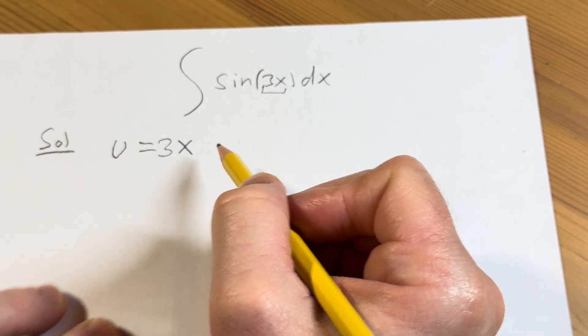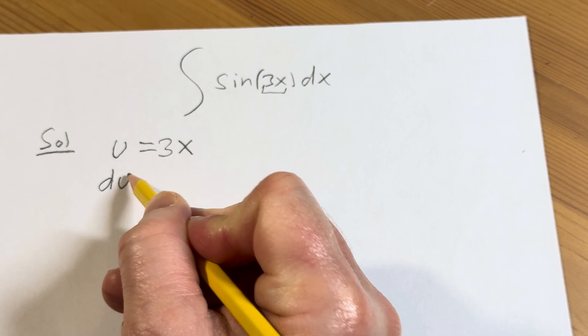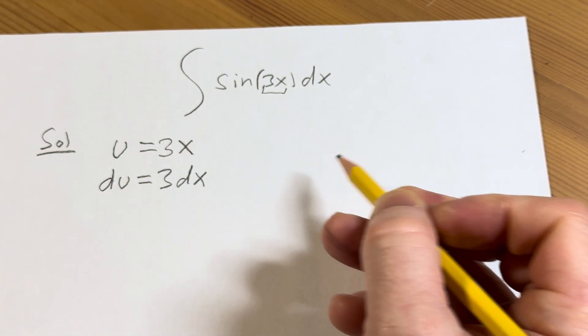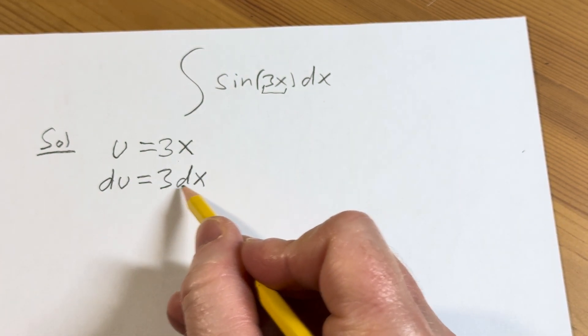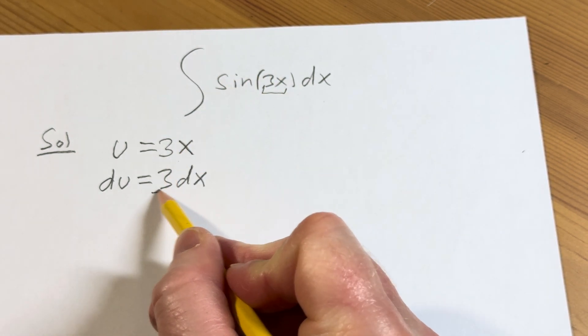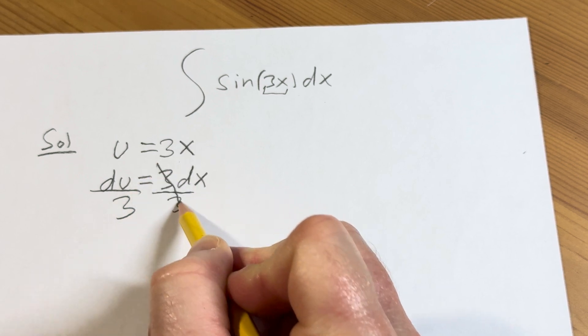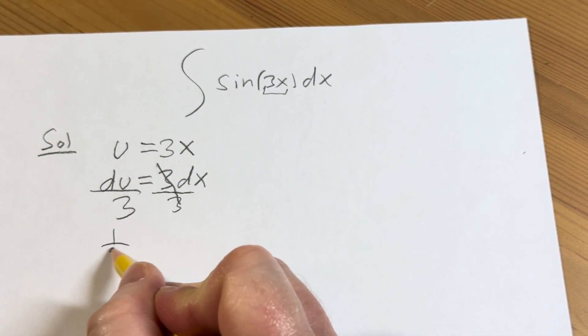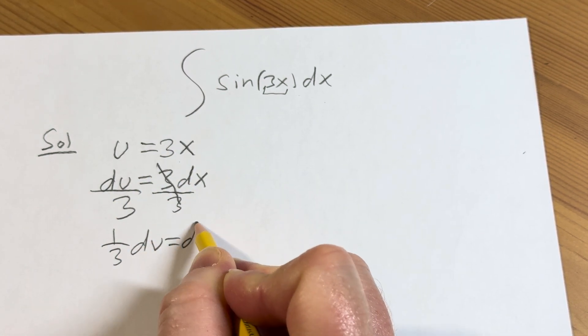We can differentiate both sides. So here we get du equals 3dx. When you get to this step, you have to make this look like what's here. So you don't have a 3 up here, so let's get rid of it. I'm going to write this as 1/3 du. And that's equal to dx.